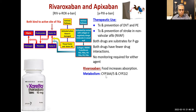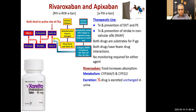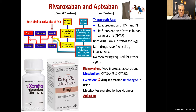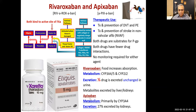Rivaroxaban excretion: one-third is excreted unchanged in urine, the rest is metabolized by the liver. Apixaban metabolism is primarily by CYP3A4; 27% is excreted by the kidneys. Both drugs are metabolized and excreted by both kidneys and liver. Both come as tablets — oral non-vitamin K anticoagulants.